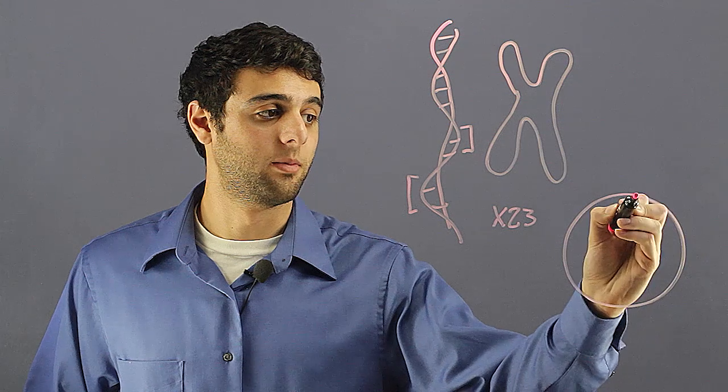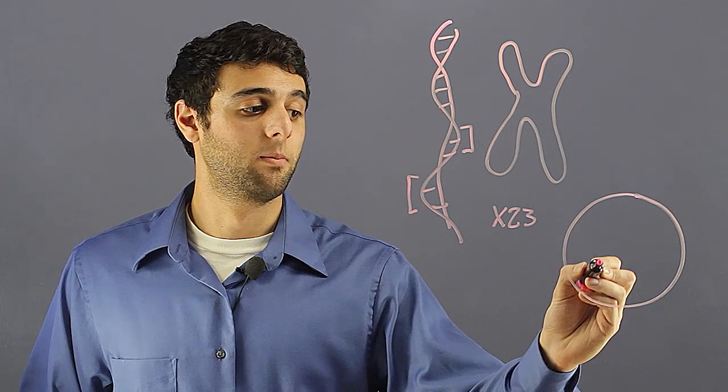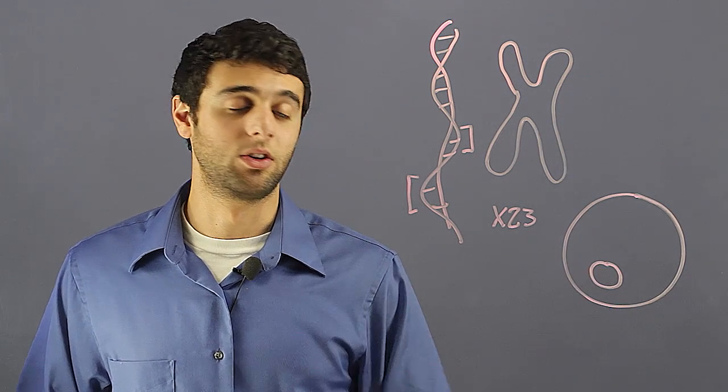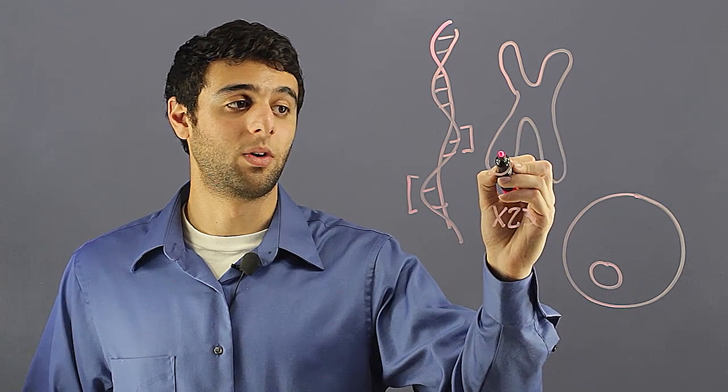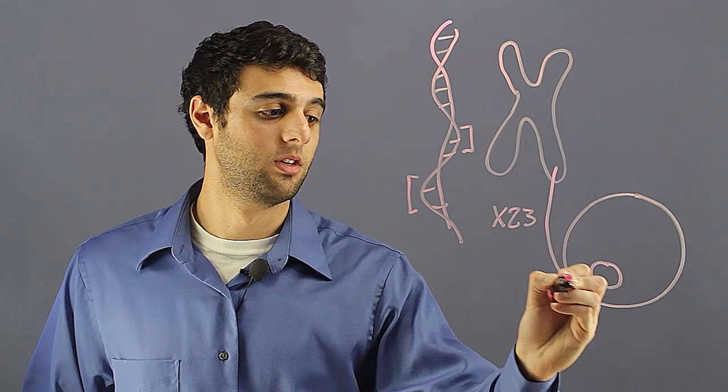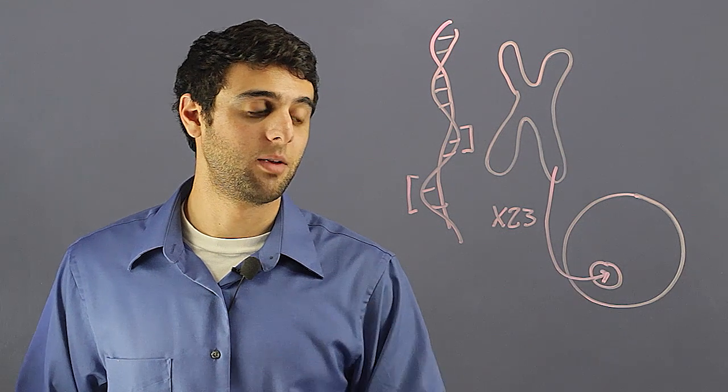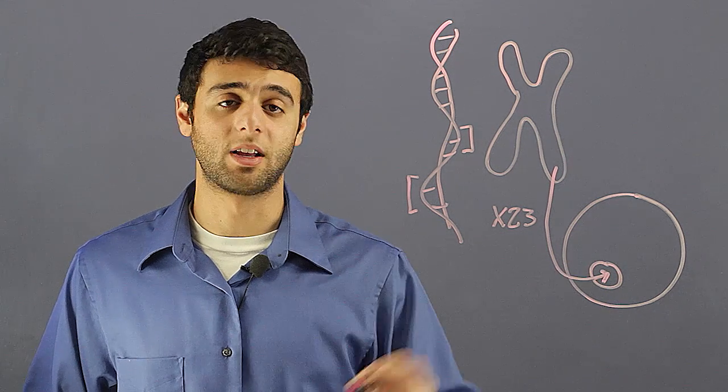And the majority of them are located in the cell, but specifically in the nucleus of the cell. So in the nucleus of each cell, we have these 23 pairs of chromosomes all tightly packed together and stuffed into the nucleus.